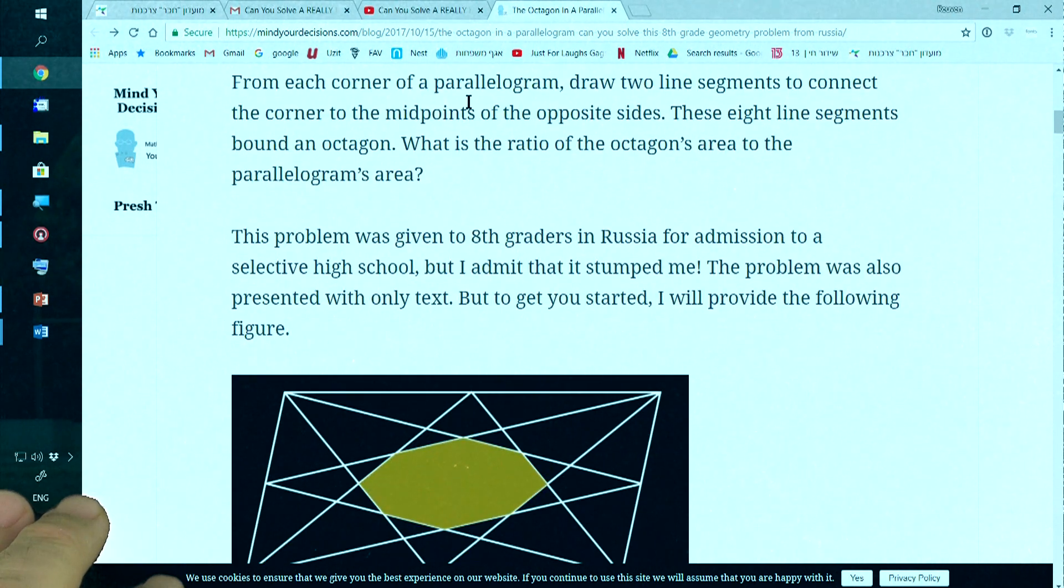From each corner of a parallelogram, draw two line segments to connect the corner to the midpoint of the opposite sides. For example, from this corner, I connect to the midpoint of this side.